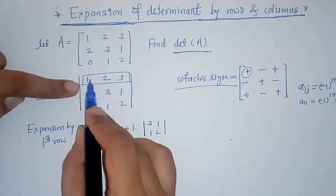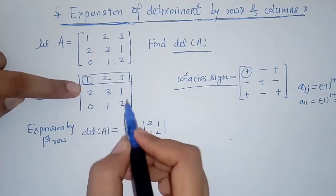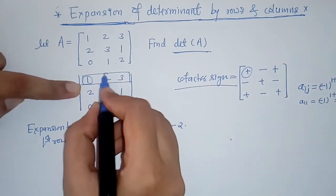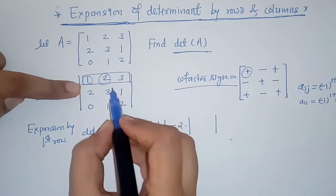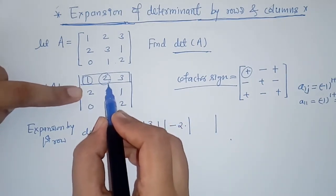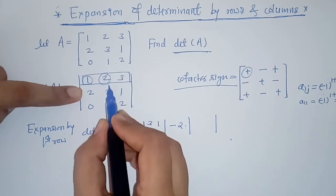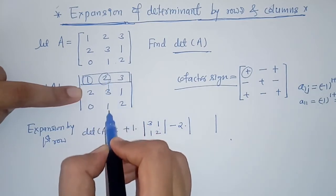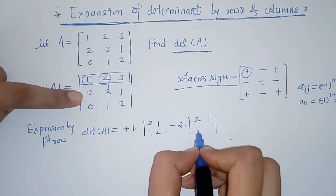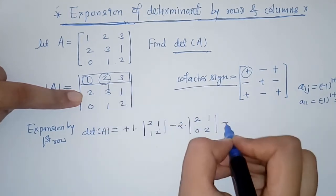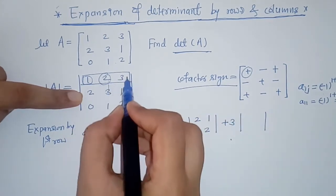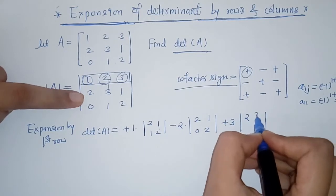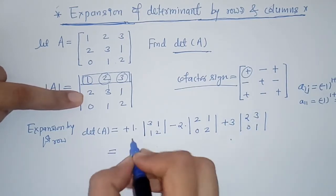Next we have the second element minus 2. Its minor is found by avoiding the row and column in which 2 lies — first row, second column — so remaining elements are 2, 1, 0, 2. The third element is plus 3, and avoiding its row and column gives remaining elements 2, 3, 0, 1.